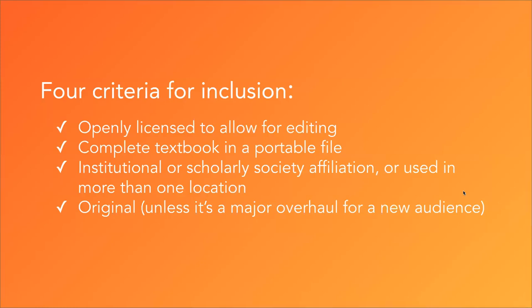Now I'm going to talk about the four criteria for including an open textbook in the library. First and foremost, there needs to be an open license on the textbook that allows for editing — usually a Creative Commons license, but sometimes a GNU or other license. The book must also be available in a complete portable file — the whole book in one file, not just separate chapters — so that a student could download the book and have access to it in its entirety, especially if they do not have reliable internet access.